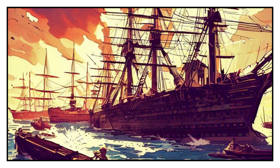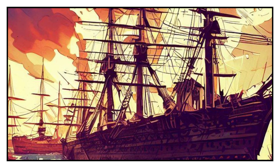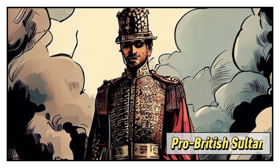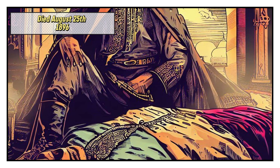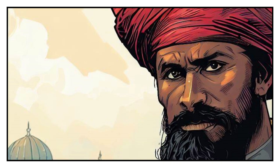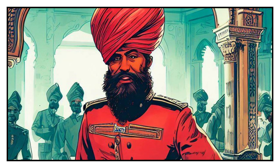In 1893, Britain installed a pro-British sultan named Hamad bin Thuaini, who agreed to follow British advice and cooperate with their interests. However, Hamad died suddenly on August 25th 1896 under suspicious circumstances. Many people suspected that he was poisoned by his cousin Khalid bin Bagash, who was more nationalist and anti-British. Khalid quickly moved into the palace and declared himself the new sultan without consulting the British consul, Basil Cave. This was a violation of the Treaty of 1890, which required that any new sultan had to obtain British approval before taking power.